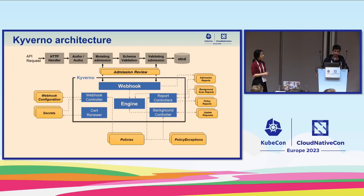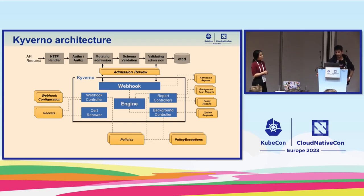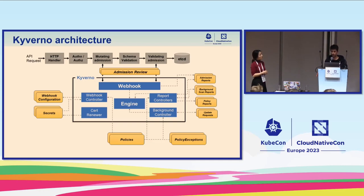Every admission request that matches the webhook configuration is transmitted to the Kyverno webhook, which invokes the Kyverno engine and evaluates all relevant policies against the resource being admitted. Based on that, the webhook takes a decision to accept or reject a request, and eventually returns JSON patches if there is a mutation policy installed. There are also two other components — the report controller and the background controller — which are not directly related to the admission phase.